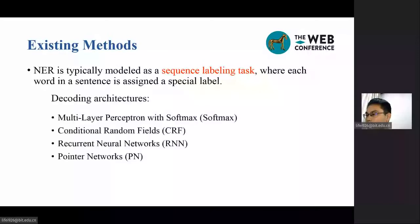In general, these approaches can be classified into four categories according to the decoding architectures: multi-layer perceptron with softmax, conditional random fields, recurrent neural networks, and pointer networks.